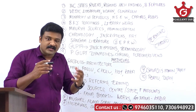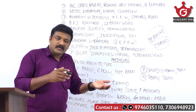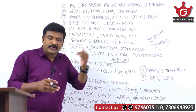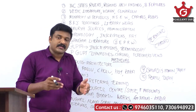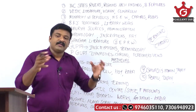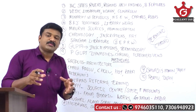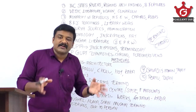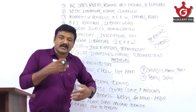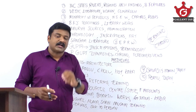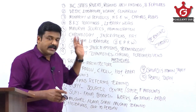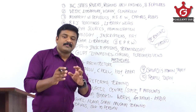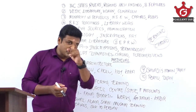Coming to the Maurya Empire, Mauryan sources are important — epigraphical sources, inscriptions, foreign accounts, literary sources, and religious literary sources. Know the different classifications of sources and what kind of information each conveys. Mauryan administration is also important, including the various terms and terminology related to Mauryan administration.